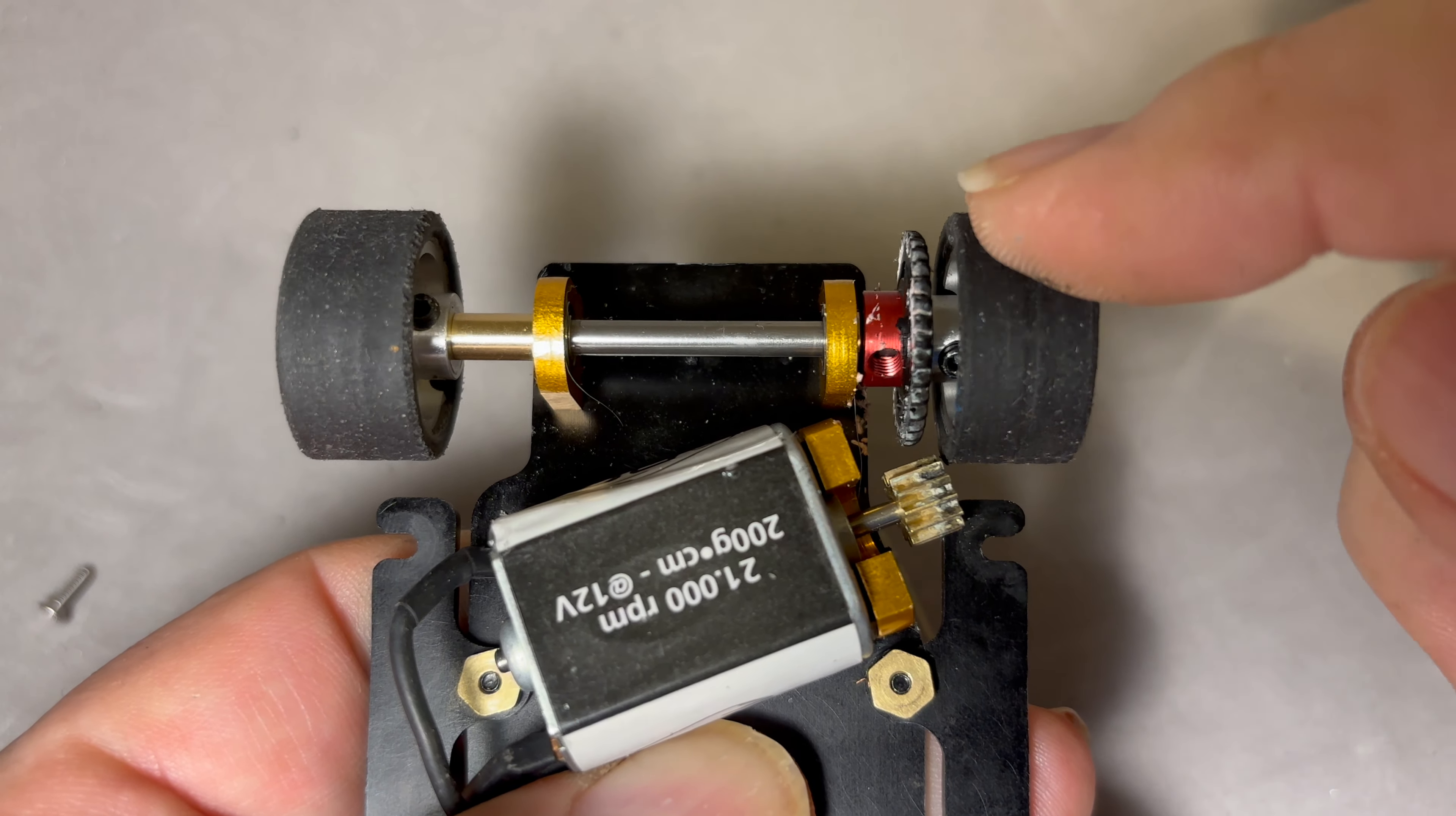The good news is, since Revo Slot uses bearings, we can adjust the rear axle so there is zero lateral play.